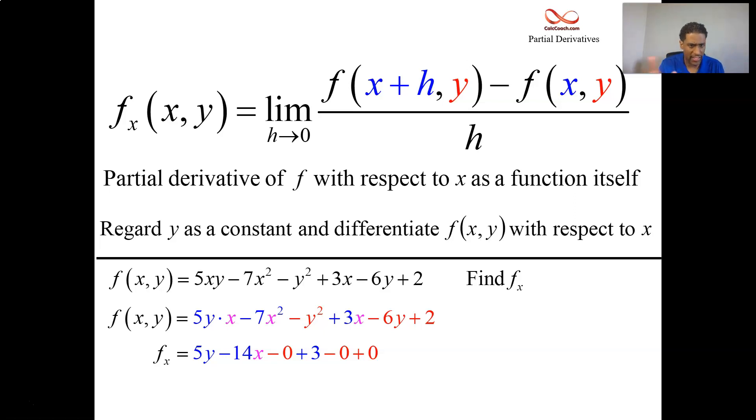And then the one term there, 3x, has 3 as its derivative. Then you get rid of the colors and get rid of the zeros. Our x partial derivative is that.